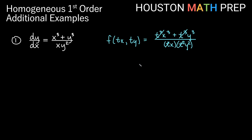Now, if our equation is homogeneous, we use the substitution y equals vx. The product rule then gives us that we replace dy with v dx plus x dv.